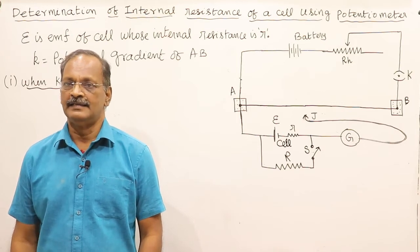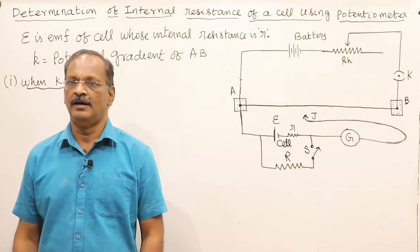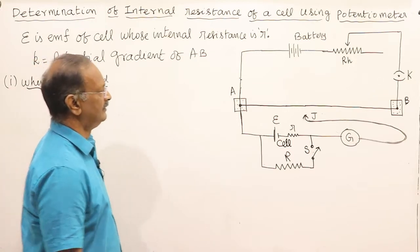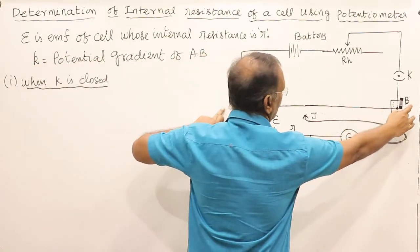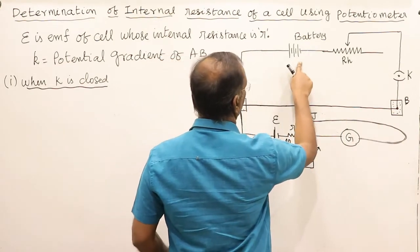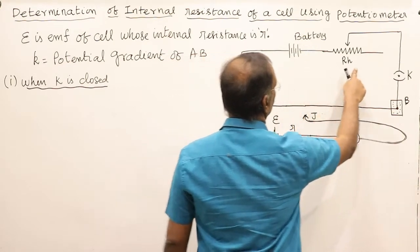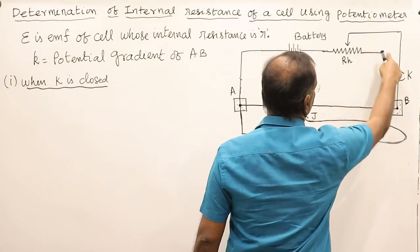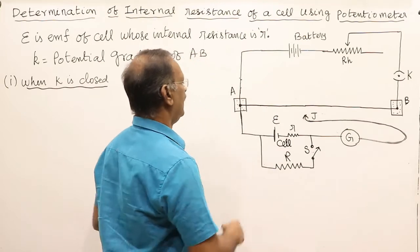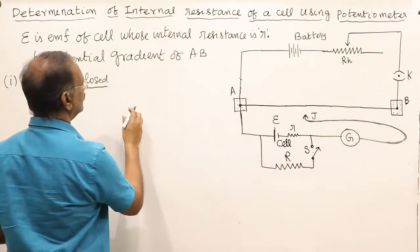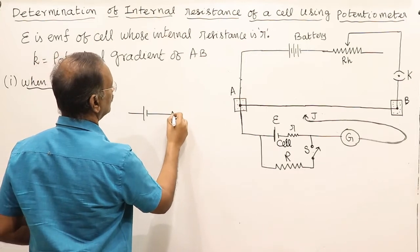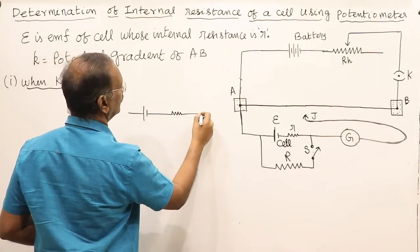To find the internal resistance of a cell using a potentiometer: this is the potentiometer with wire AB. A powerful battery is connected along with a rheostat and a key. It is connected to A and B, and this is the cell whose EMF we have to find.